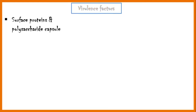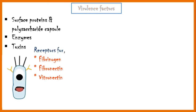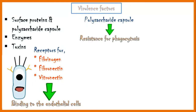Staph has several virulence factors, including surface proteins and polysaccharide capsule, enzymes and toxins. Surface proteins include receptors for fibrinogen, fibronectin, and vitronectin. These receptors enable the bacteria to bind the endothelial cells. Due to the polysaccharide capsule, staph is resistant to phagocytosis, and it also enables the bacterium to bind artificial surfaces such as catheters and prosthetic valves.